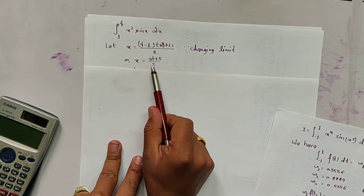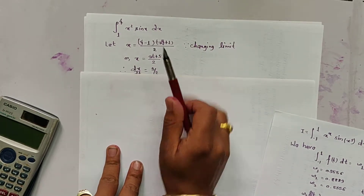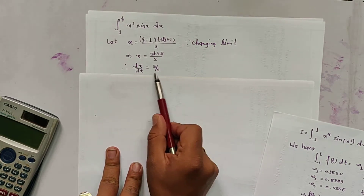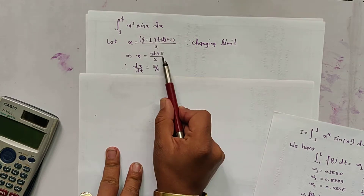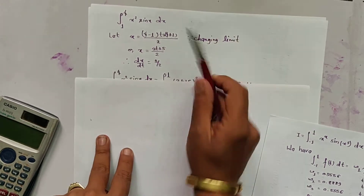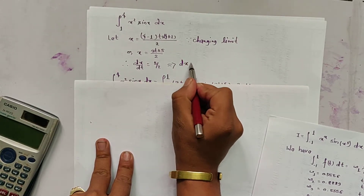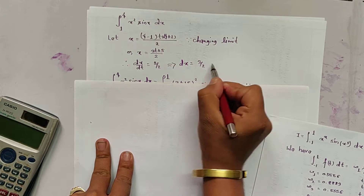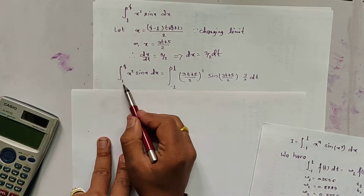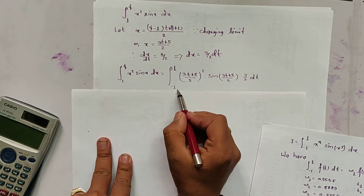Substituting a = 1 and b = 4: (4 minus 1) = 3, so x = (3t + 5) / 2. Taking the differentiation with respect to t, since 5 is a constant it is removed, giving dx/dt = 3/2, which means dx = (3/2) dt.